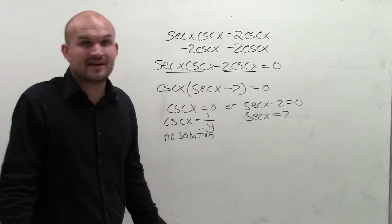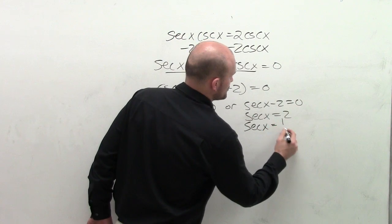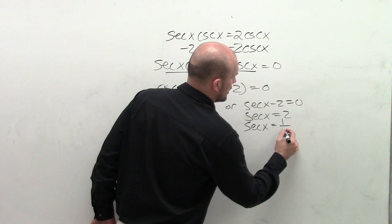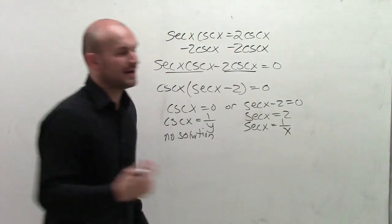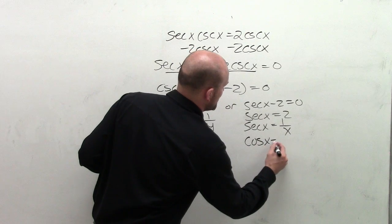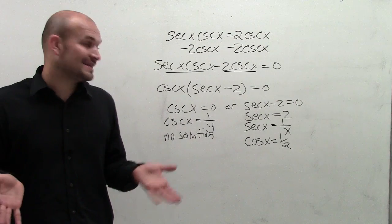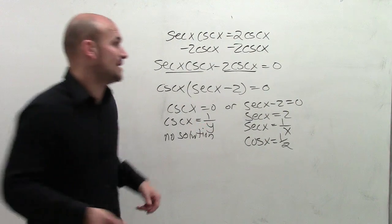So now let's take a look at secant of x equals 2. Now remember, the secant of an angle is equal to 1 over x. So what I like to do is rewrite this as cosine, which would be the reciprocal, which means I'm going to have 1 half. So now I can find the values when cosine of x is equal to 1 half.